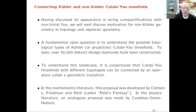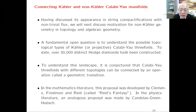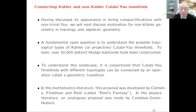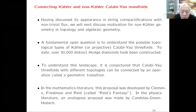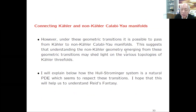Now let us go in a somewhat different direction. In string compactification, as we know, there is a huge number of Calabi-Yau manifolds, and this makes physicists uneasy—there are too many of them. It was conjectured by Reid—Reid's fantasy—that all of them, although they have different topologies, can be connected by an operation called a geometric or conifold transition. This proposal was developed by Clemens and Robert Friedman and Miles Reid, and in physics was studied by Candelas, Green, and Tristan Hübsch.